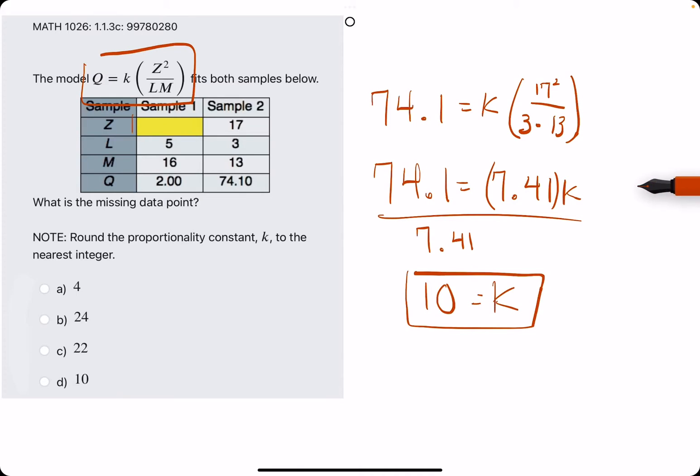Now that we have our K value, we move on to sample 1 values and sort of restart that process. We plug in everything we know. So we know Q is 2, we now know our K value is 10, and we're plugging in our Z value, which we actually do not know. So we have Z squared. On the bottom, we have L times M, or 5 times 16.